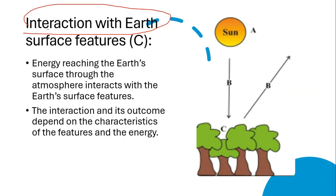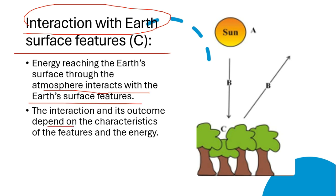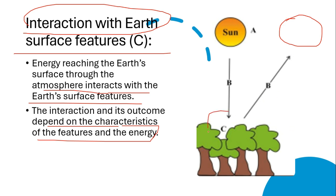The third step is interaction with earth's surface features. When this energy reaches earth's surface through the atmosphere, it interacts with earth's surface features. This interaction and its outcomes depend on the characteristics of the feature and the energy. What kind of information you receive at the satellite sensor depends totally on what kind of interaction happened on the earth's surface and what the characteristics of the feature are.